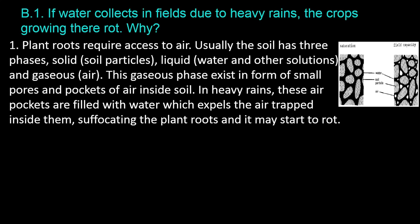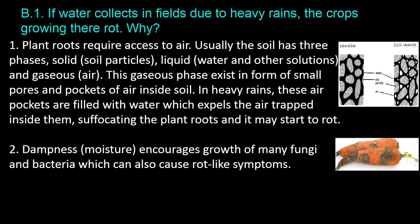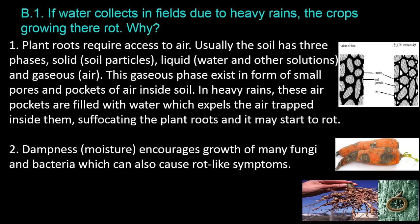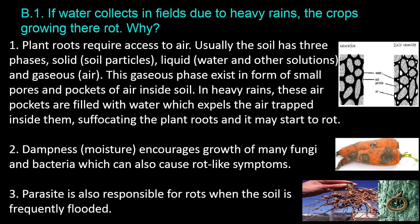In heavy rains, these air pockets are filled with water, which expels the air trapped inside them, suffocating the plant roots and causing them to start to rot. Dampness and moisture encourage the growth of many fungi and bacteria which can also cause rot-like symptoms. Parasites are also responsible for rots when the soil is frequently flooded.